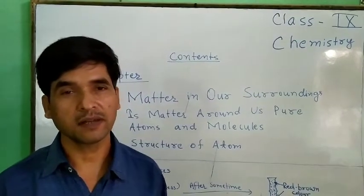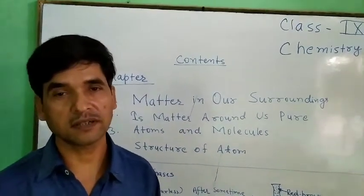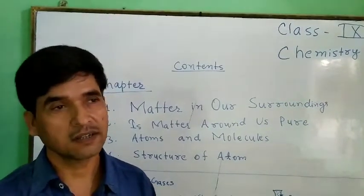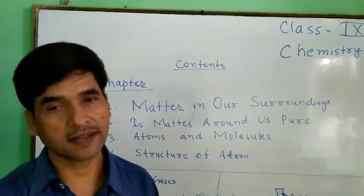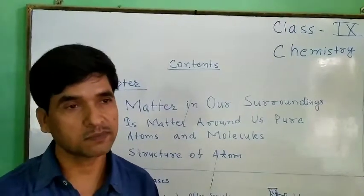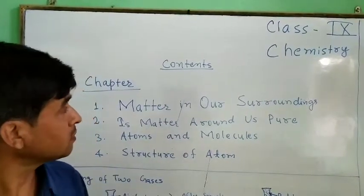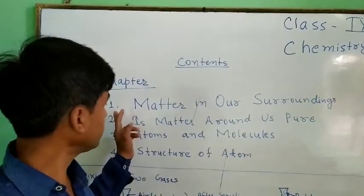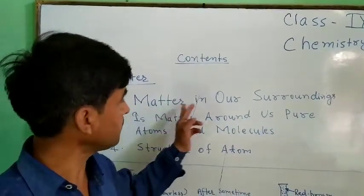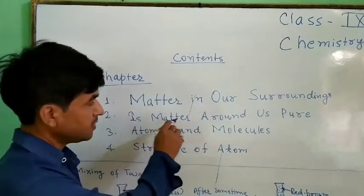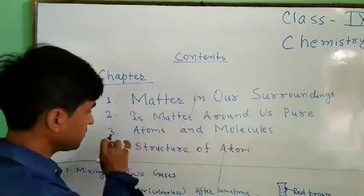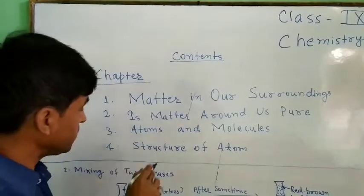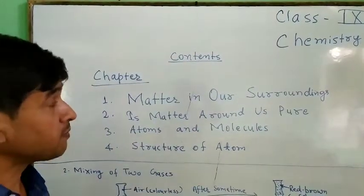Hello, I am Havai Kumar. I am explaining about the chemistry class 9th. In this class, we will have four chapters. The 1st chapter is matter in our surroundings. The 2nd chapter is matter around the sphere. The 3rd chapter is atoms and molecules. The 4th chapter is structure of atoms.